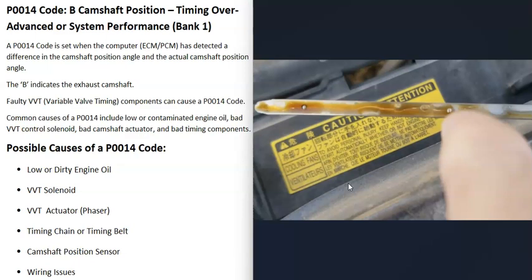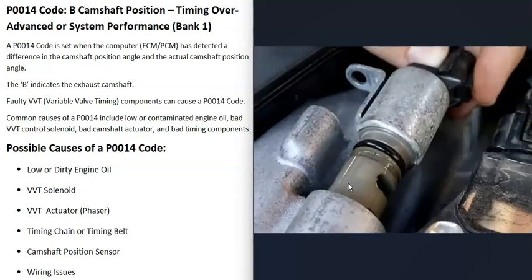The first possible cause of a P0014 code is low or dirty engine oil. Engine oil flows through all the variable valve timing components — through the solenoids and the actuator. If the oil is low or really dirty, it can throw those components off. So first, check your engine oil to make sure it's not low and not really dirty.